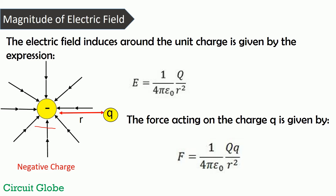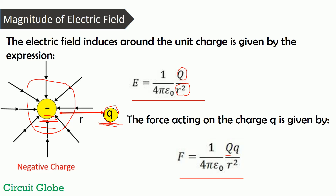Consider a unit charge particle placed in vacuum and another charge particle placed near it — because of this charge, an electric field is induced around the region. The magnitude of that field is calculated using an expression where R represents the distance between the two charges and Q shows the magnitude of the charge. When a unit charge is placed in the field, it experiences a force of attraction or repulsion, and that force is also calculated by a corresponding expression. These are the two formulas used for calculating the electric field and the force acting on the charge.